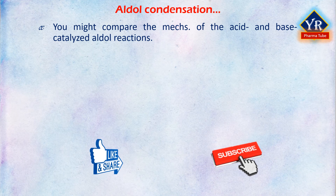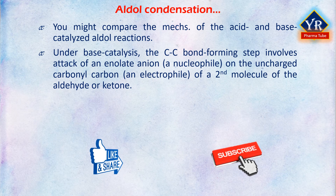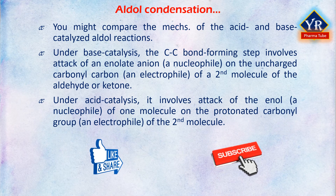Comparing the mechanisms of acid- and base-catalyzed aldol reactions: under base catalysis, the carbon-carbon bond-forming step involves attack of an enolate anion (a nucleophile) on the uncharged carbonyl carbon (an electrophile) of the aldehyde or ketone. Under acid catalysis, it involves attack of the enol (a nucleophile) of one molecule on the protonated carbonyl group (an electrophile) of the second molecule.